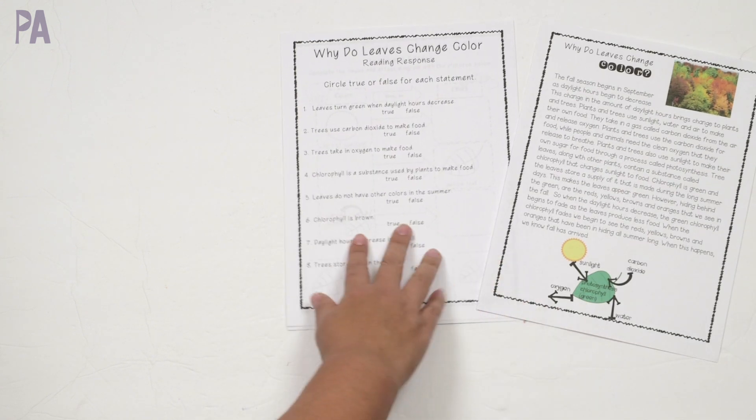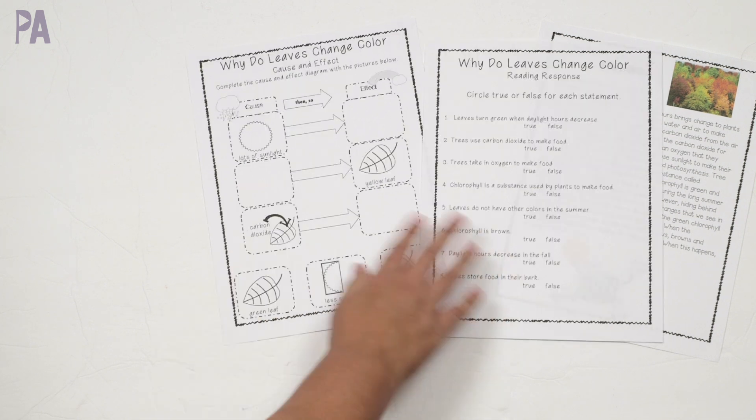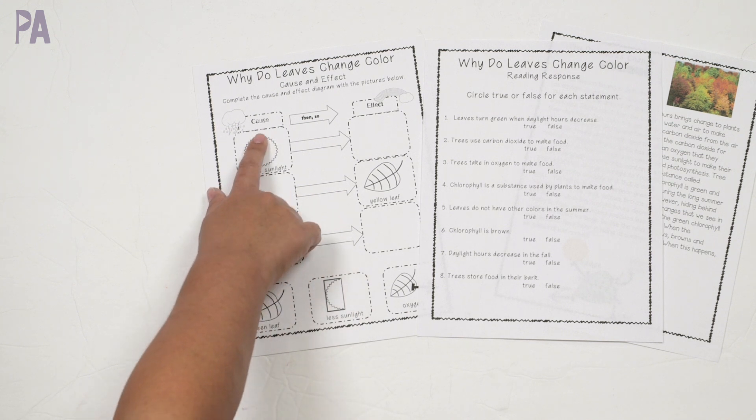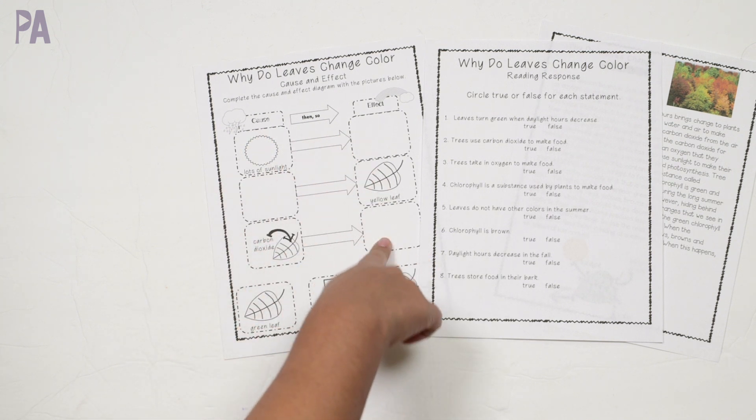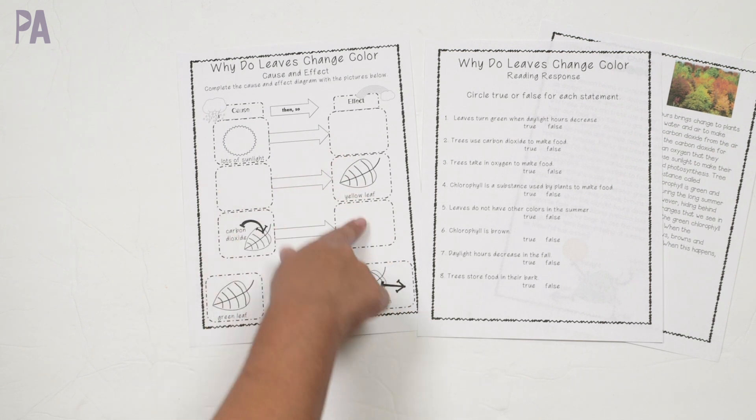Then we have a true and false sheet here for reading comprehension of what they just read. And then a cause and effect chart. So this is a diagram where we have cause on one side here, and then over here, then so effect. And so you cut out these little boxes here and you fill in the blanks of what's happening.